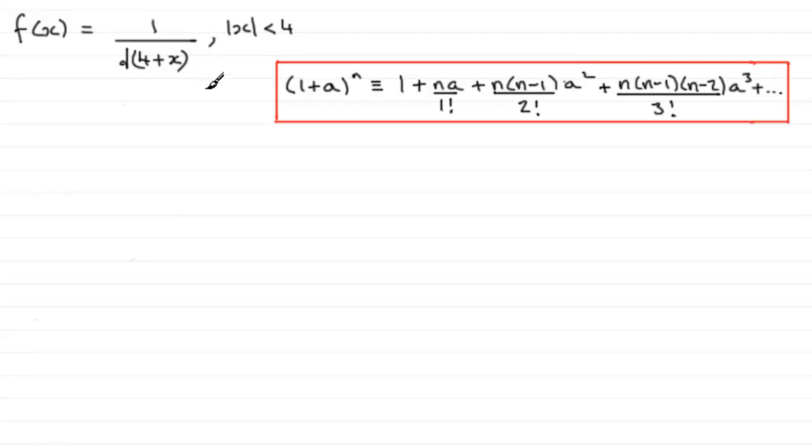We need to put this in this format. To do that, this is 1 over (4+x) to the half, so if we bring this up to the top it becomes (4+x) to the power minus a half.